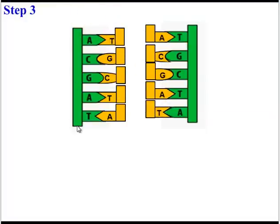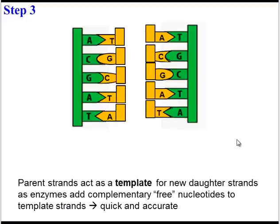And what we have here is that each strand from the original molecule is serving as a template to copy from for the new molecules. So this makes DNA replication really quick and really accurate. Here are the parental template strands, and here are the new daughter strands.